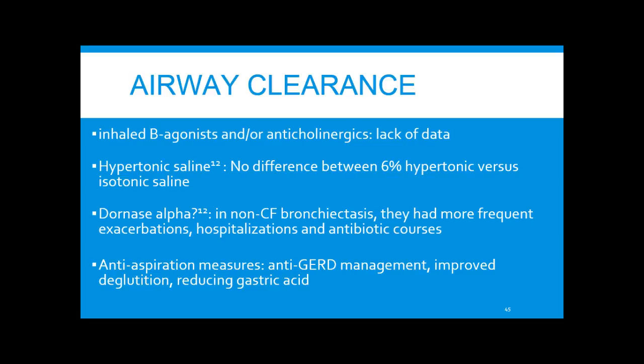For inhaled beta agonists and anticholinergics, there's not enough data, but patients with obstruction are sometimes given a trial. For hypertonic saline, specifically in non-CF bronchiectasis, no difference was found versus isotonic saline, though patients in both groups felt a benefit. Dornase alpha is a staple in CF treatment, but in a non-CF study, patients actually had more frequent exacerbations, hospitalizations, and antibiotic courses — so it's not recommended. Other airway clearance measures include GERD management, fixing aspiration, swallowing techniques, and reducing gastric acid.